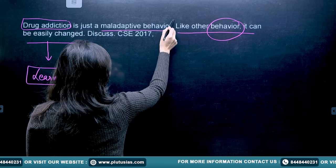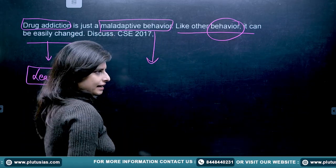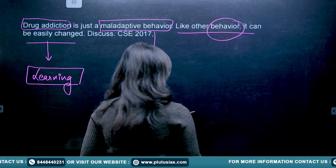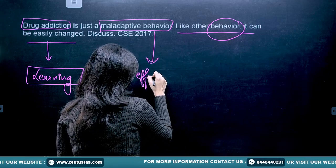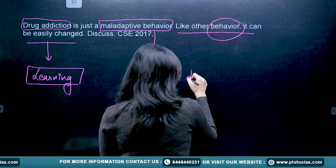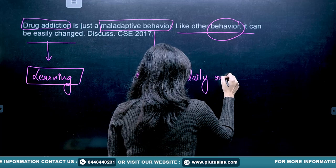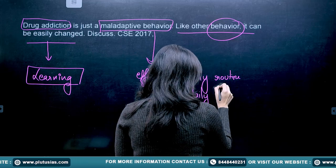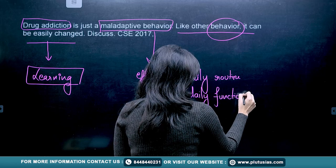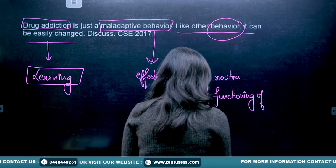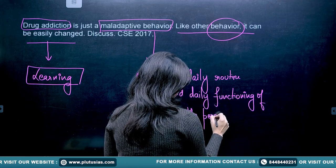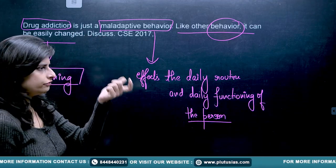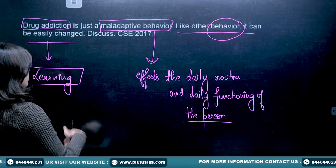You need to first understand what maladaptive behavior is. Any kind of behavior which affects the daily functioning of a person — affecting the daily routine and daily functioning of the person — is considered maladaptive behavior. The maladaptive behavior they have focused on here is drug addiction. If a person is a drug addict, the question asks: can this behavior be changed?